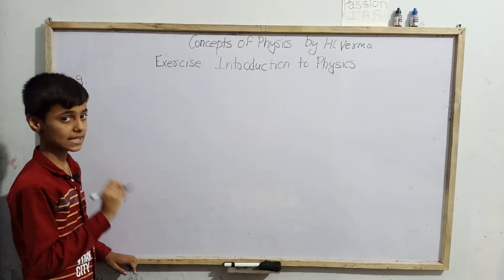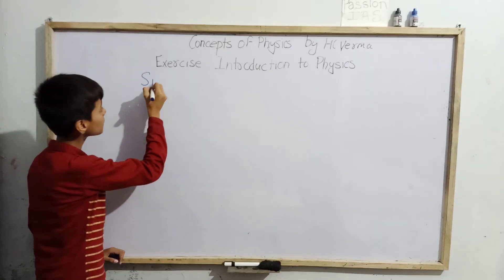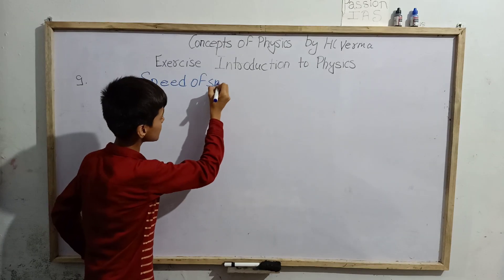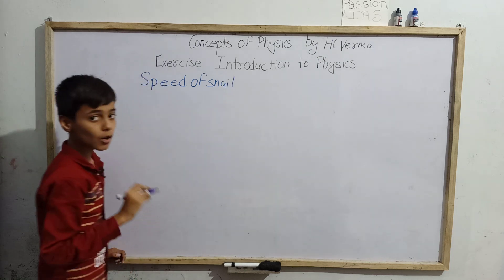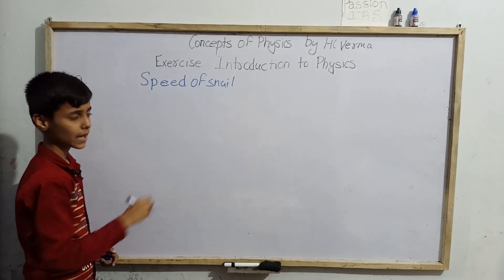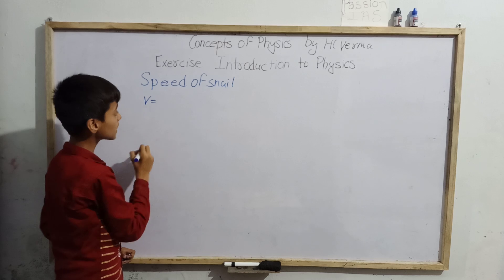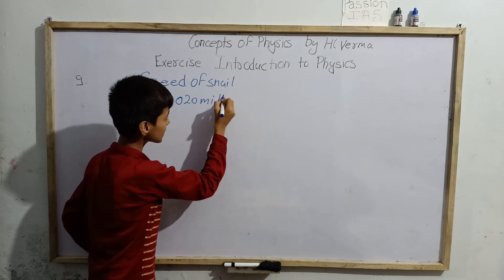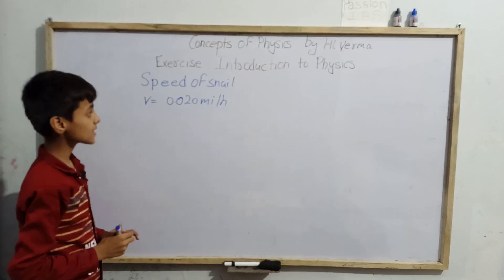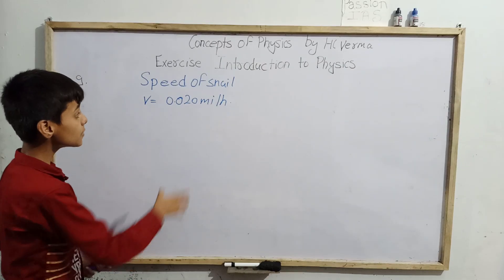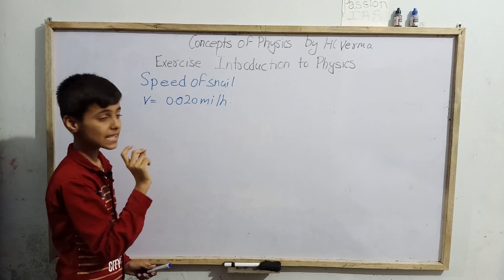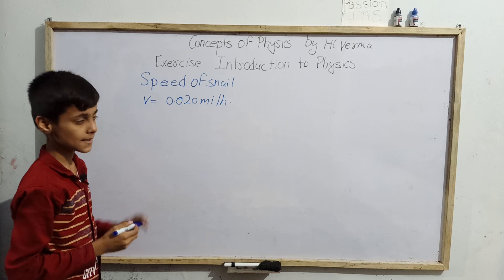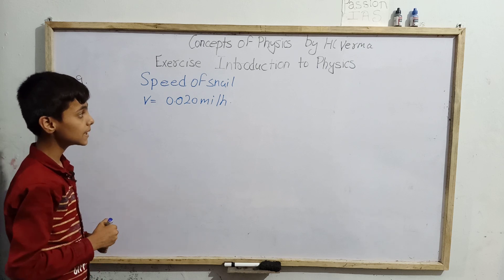First, we will convert the speed of the snail into SI units. The speed of the snail, denoted by v_s, equals 0.020 miles per hour. We have to convert it into meters per second, because meter per second is the SI unit of speed.